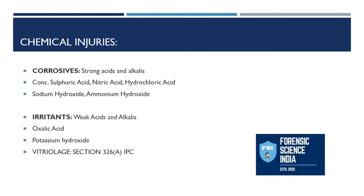Chemical injuries are caused due to corrosives or irritants. Corrosives are strong acids and alkalis like concentrated sulfuric acid, concentrated nitric acid, and concentrated hydrochloric acid. Even if they fall on the surface of the skin they can cause corrosion, and if inhaled or ingested they can cause corrosion of the GI tract as well as other internal organs. Alkalis such as sodium hydroxide and ammonium hydroxide are also included.